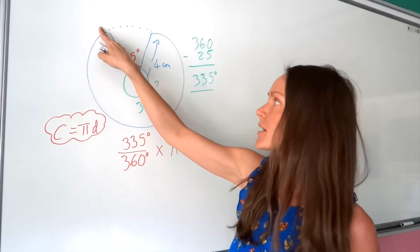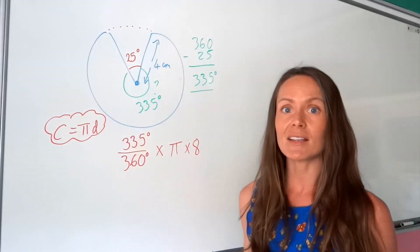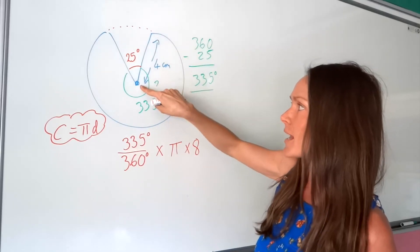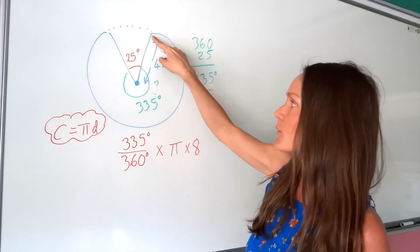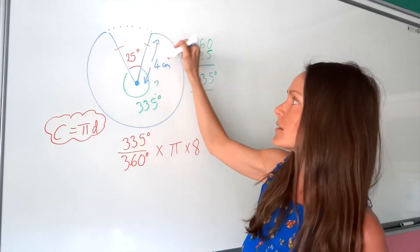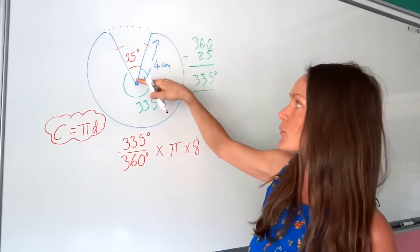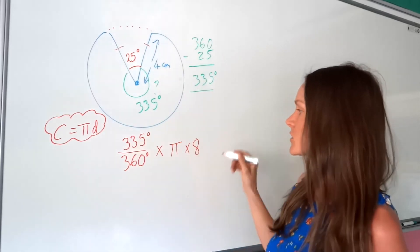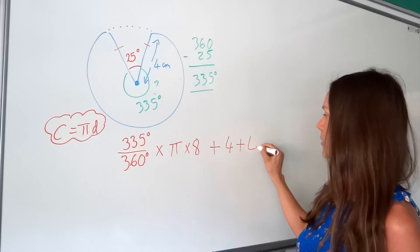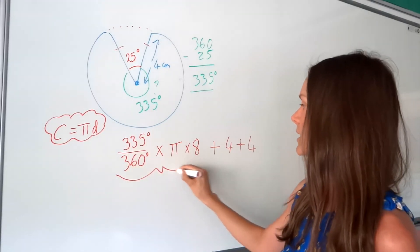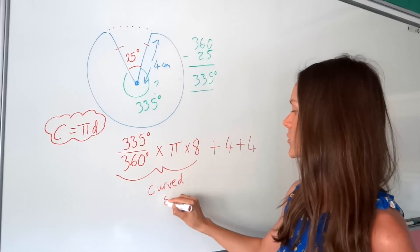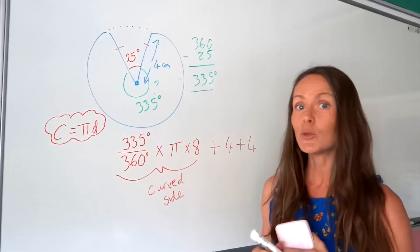Remember, the perimeter is the distance all the way around the outside of the shape. So you need to add on the straight edges, just like before. So if this one's 4, so is this one. Because they are both the radius. The radius is 4 here and it's the same length here. So that's the curved part. Don't forget to add on the straight parts. So I'm just going to write here, curved side, just so we know where that came from. And then you put it in the calculator.